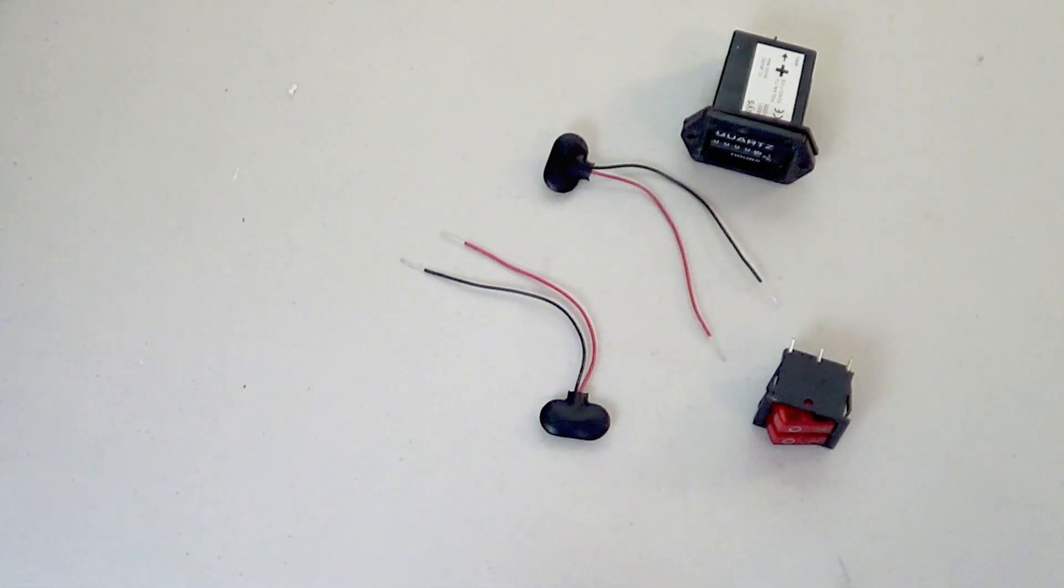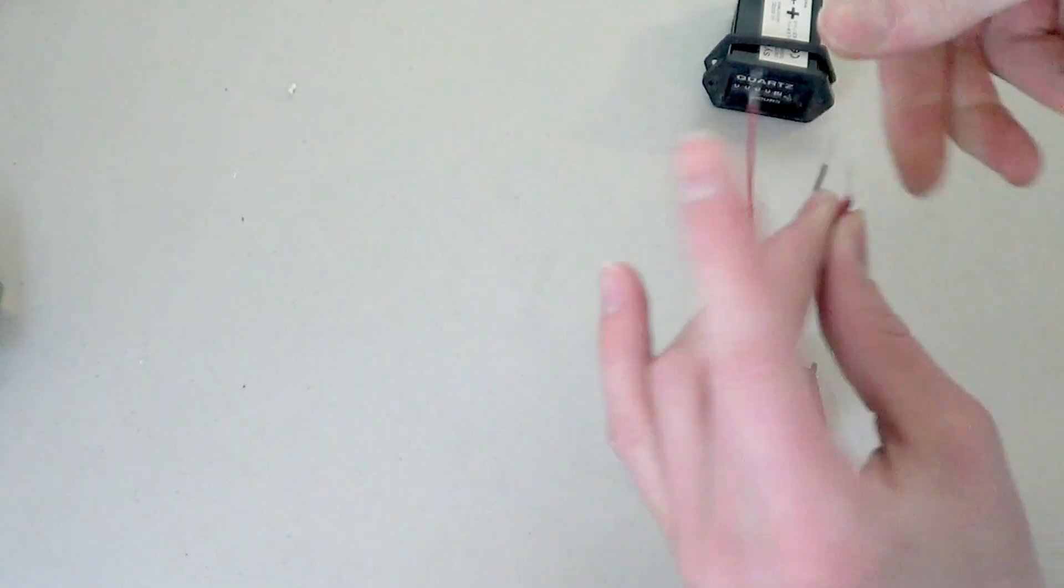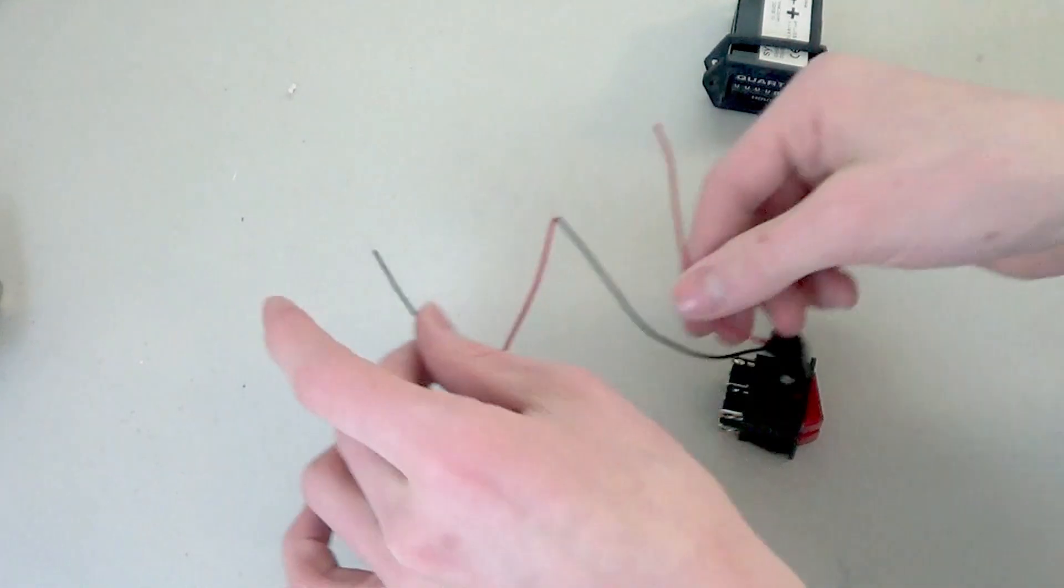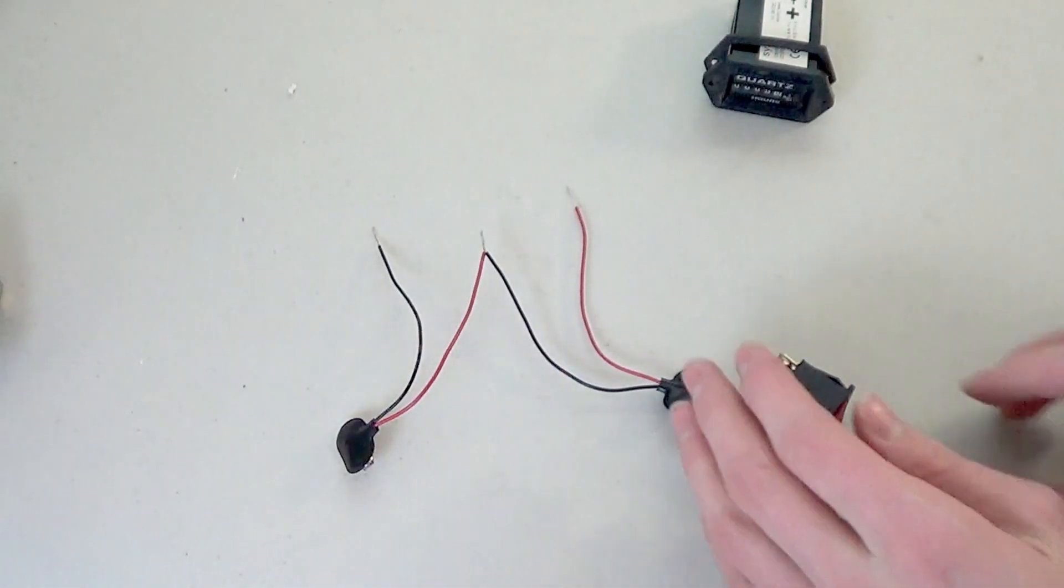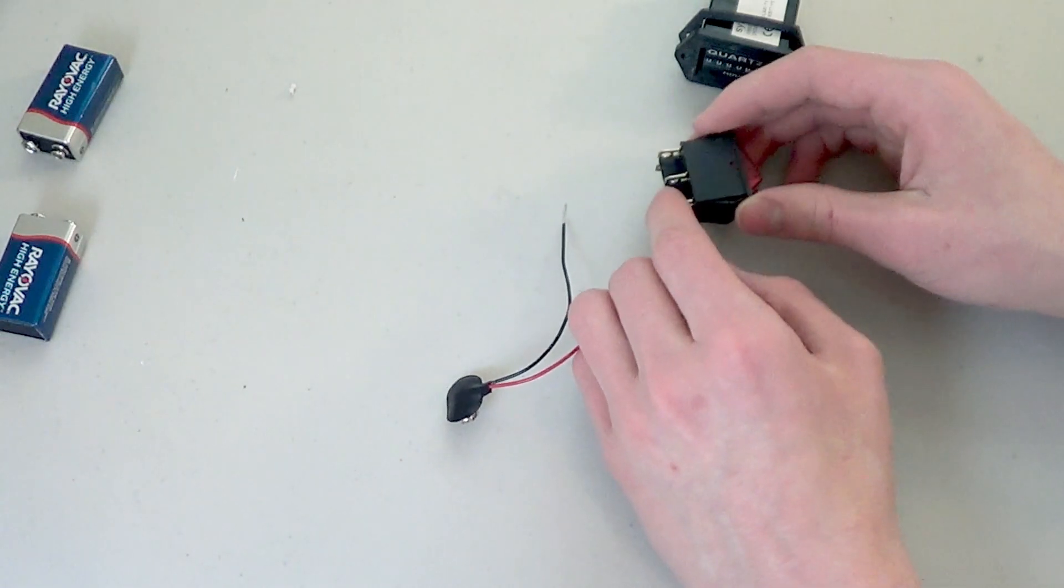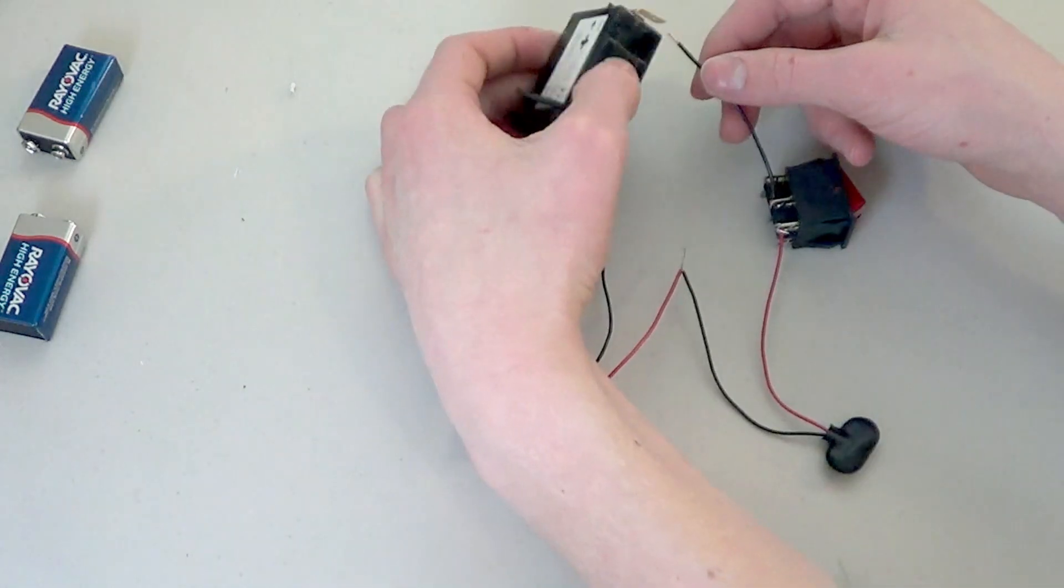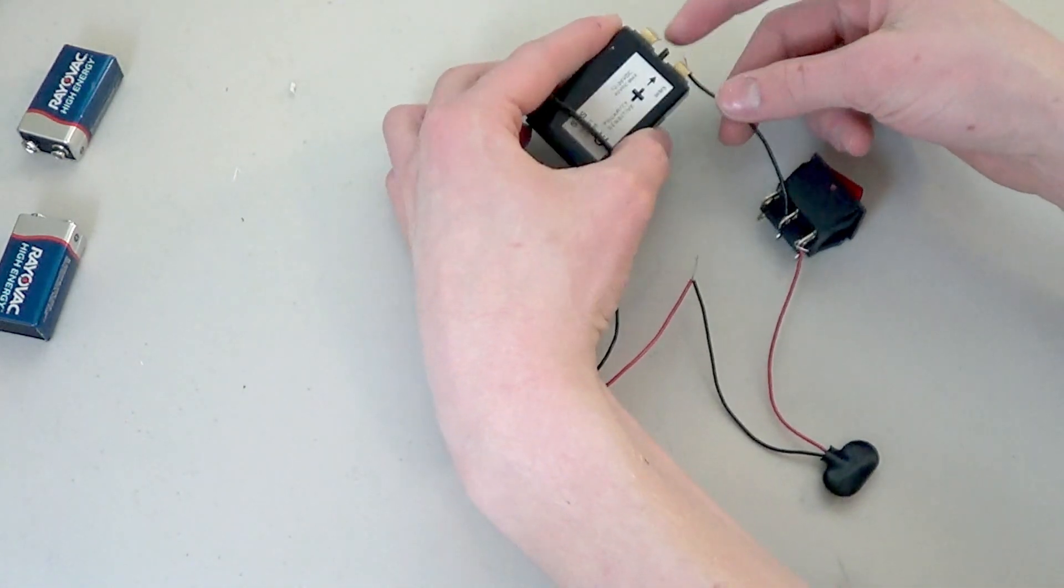and an on-off switch. I'm wiring the two 9-volt batteries in series so that the voltage doubles, then wiring the switch to interrupt the circuit, and making sure to include the Hobbs meter.